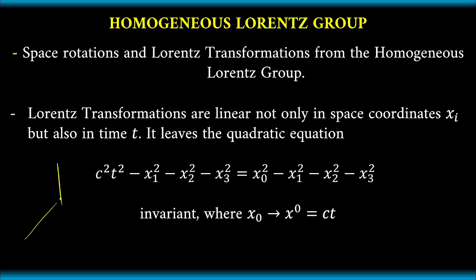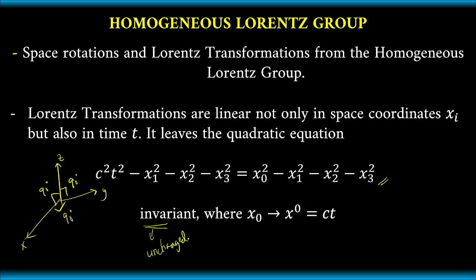We have space coordinates — suppose this is the X axis, this is the Y axis, and this is the Z axis. The angle between X and Y is 90 degrees, YZ is also 90 degrees, and this is also 90 degrees. It leaves the quadratic equation invariant, and as we explained in our previous lectures, invariant means unchanged for certain transformations.